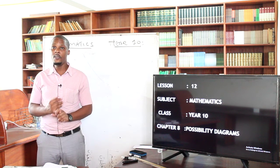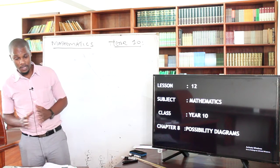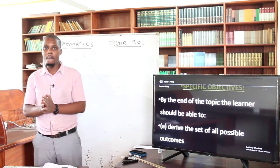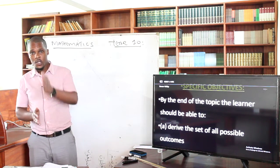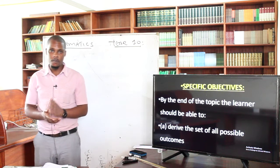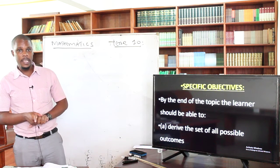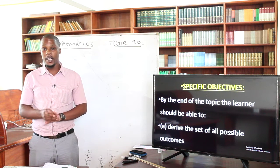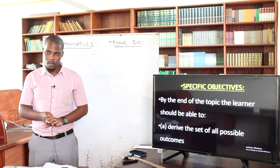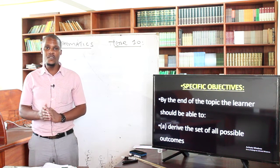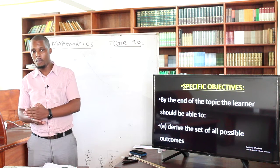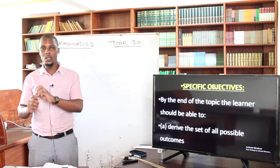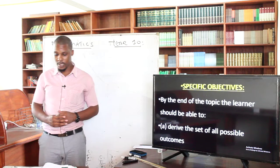So they are the ones that are going to guide us on how to come up with the concept of Theoretical Probability. Because we agree that in the Theoretical Probability, you don't need to perform an experiment. You don't have to rely on past experience. What you need to list is the number of the possible outcomes. The objective of today's lesson is for you to be able to derive the set of all possible outcomes, because in Theoretical Probability, it is given by the favorable number of outcomes over the total possible number of outcomes.